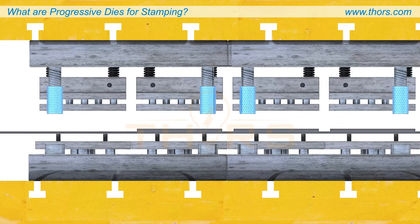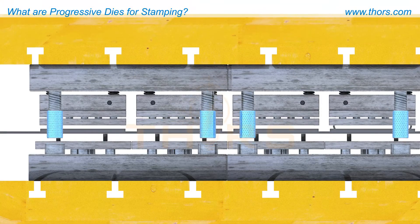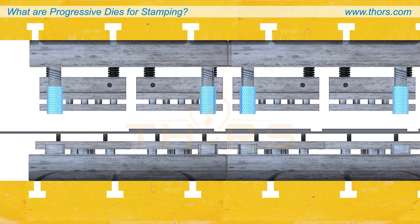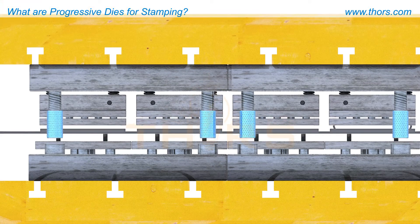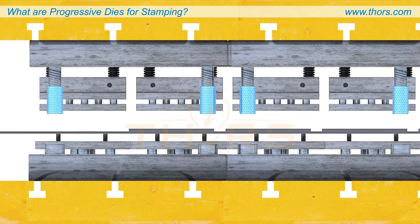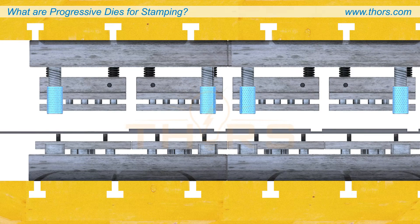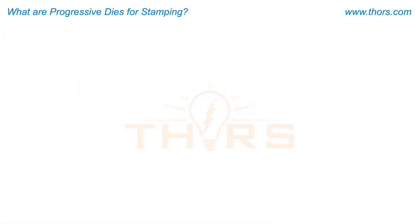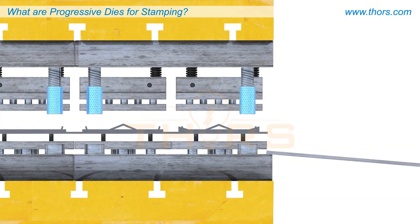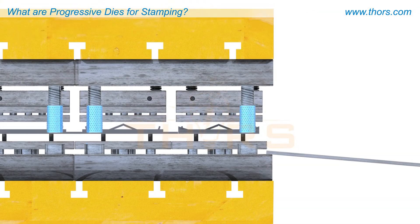Meanwhile, these processes are all being performed while the part is still attached to the material strip, processing through the die in succession. At the last station, the finished part is cut free.